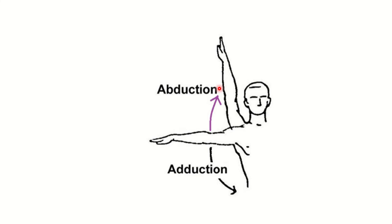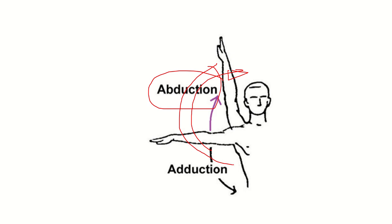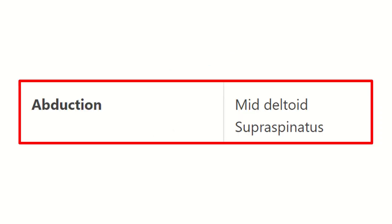Here we can see a figure showing abduction of the shoulder joint — abduction is when the hand goes in this direction. On the other hand, adduction is when the hand moves close to the body. In the second picture we can see the muscles of abduction.